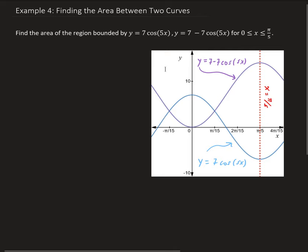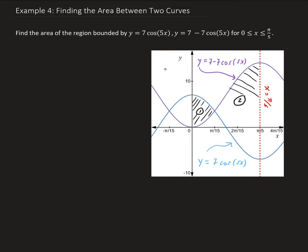x is going between 0 and pi over 5, and we notice that these two functions are crossing each other. So this means we need to find the area for the first region and for the second region. First, what we need to do is find out where these two functions cross each other — it looks like it's going to be around pi over 15, but we need to verify that by setting the two functions equal to each other to find the intersection point.